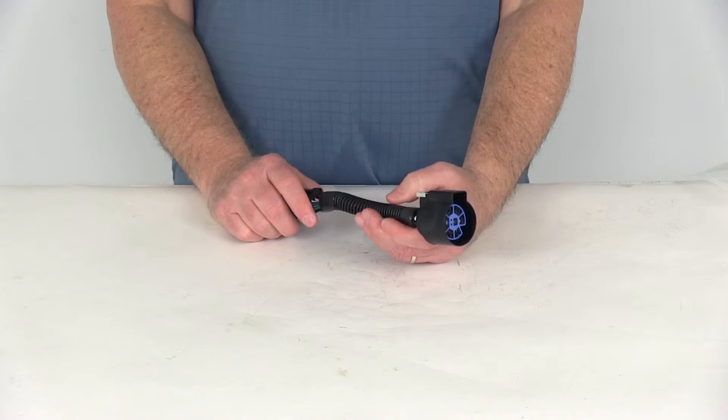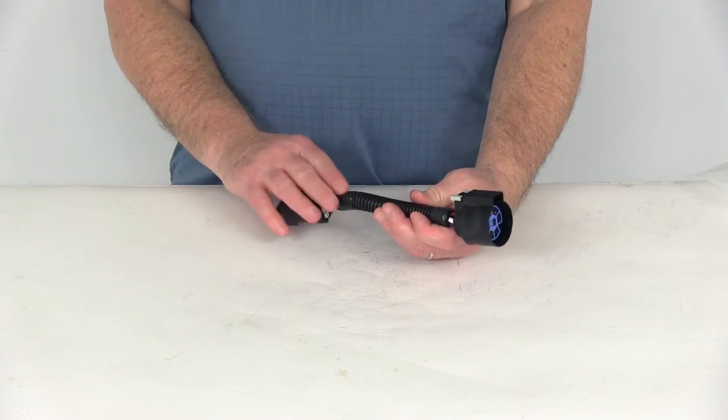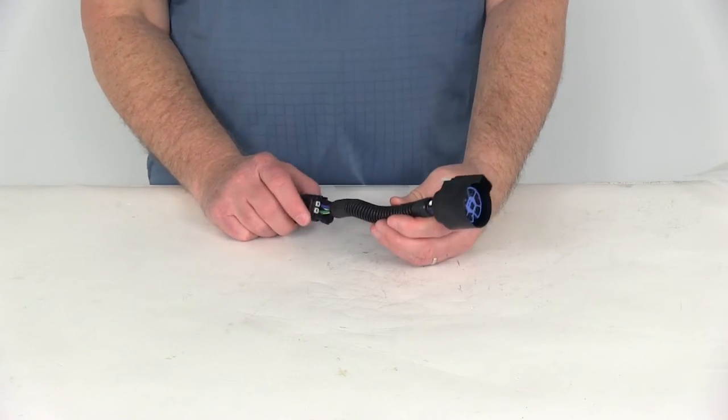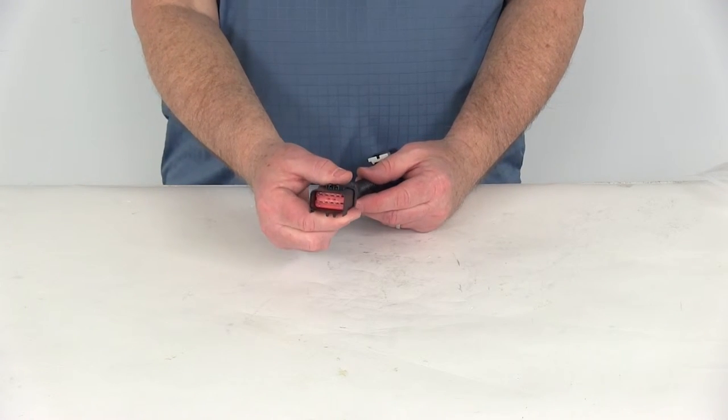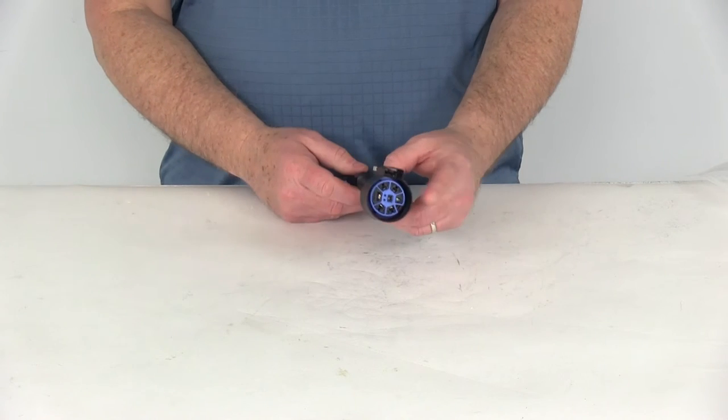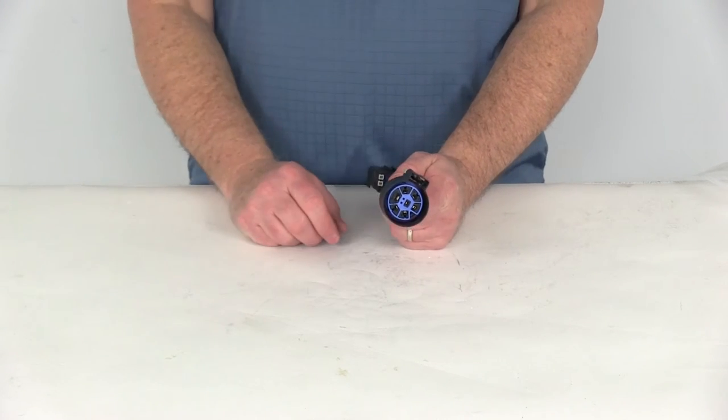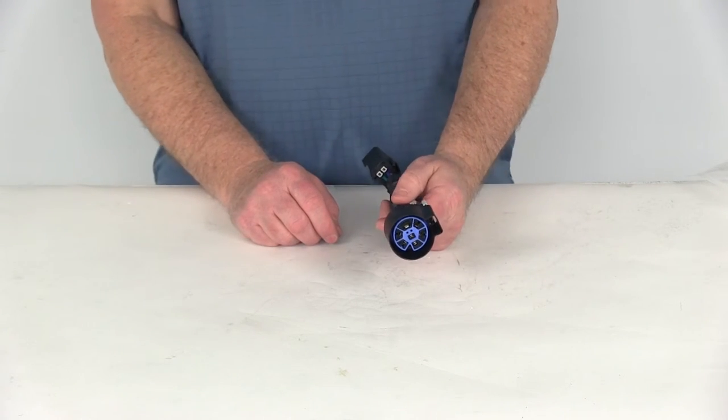Both those products that we sell separately are listed on the product page for this part as a related product. As you can see, you've plugged a rectangular end to your OE harness, and that'll adapt it to the round end that'll plug into either the 7-Way Trailer Connector or the 5th Wheel Gooseneck Trailer Connector wiring harness.